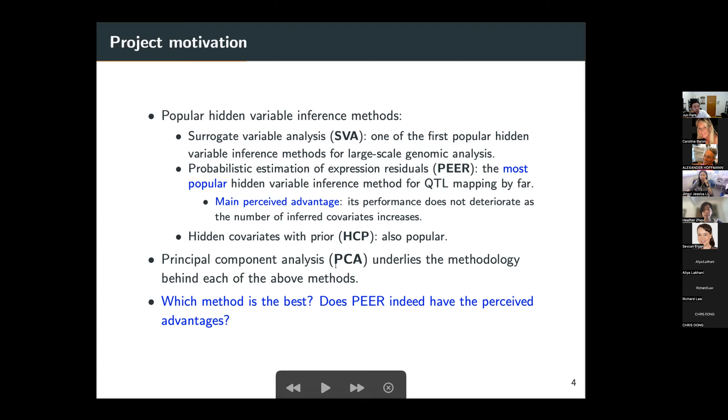But from a statistical standpoint, principal component analysis, a very basic and fundamental method that most of us are familiar with, it underlies the methodology behind each of these three methods that I just mentioned. So our question was, which method is the best for inferring hidden variables in QTL analysis? And does PEER, the most popular method, indeed have the perceived advantages?